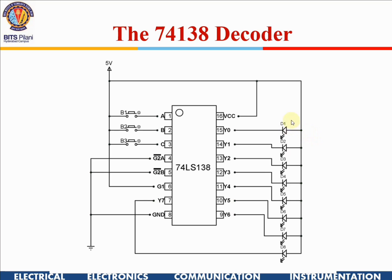In this circuit, LEDs are connected with the power supply on the anode side and the cathode connected to the output pins. So whichever output is selected — for example, 0-0 — that LED will come on because a 0 comes as the output.